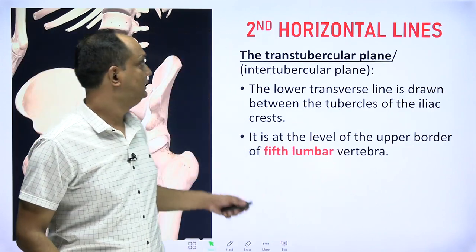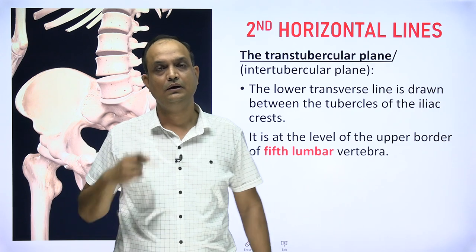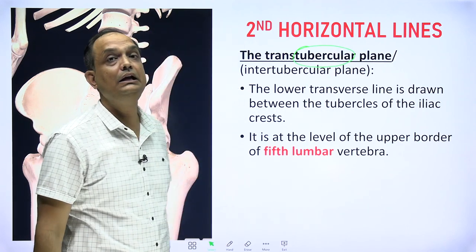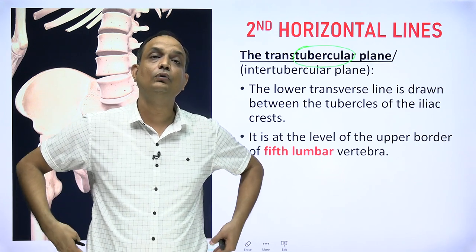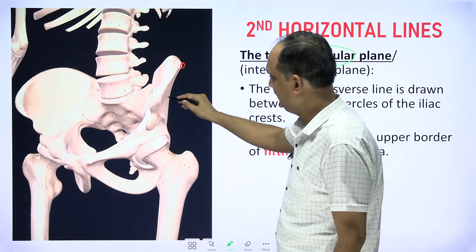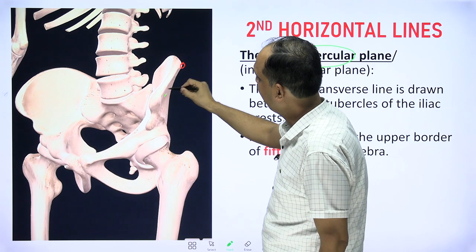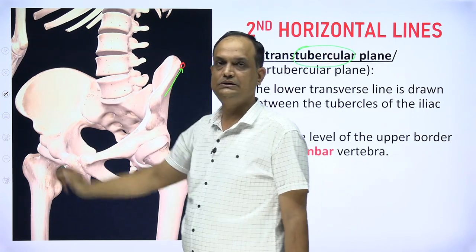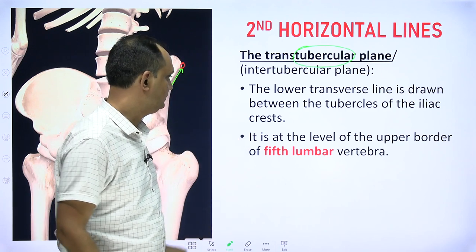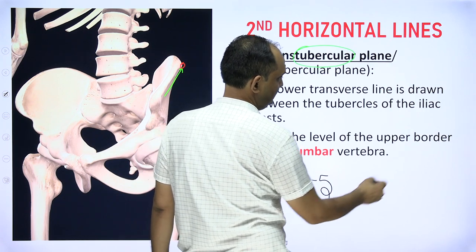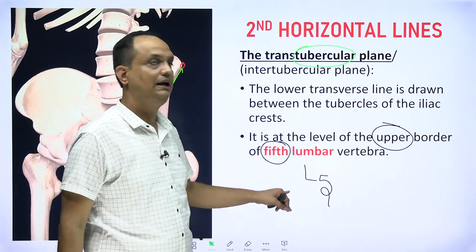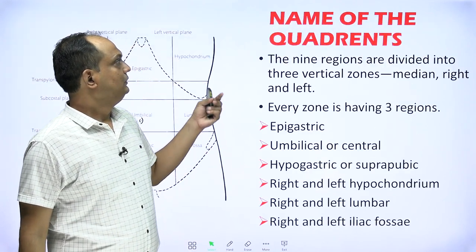The second horizontal plane is the trans-tubercular plane. The tubercle referred to is the tubercle of the iliac crest of the hip bone, located on the outer border about 5 cm behind the ASIS. Joining the tubercles on both sides gives the trans-tubercular plane, which crosses the upper border of L5 — in contrast to the transpyloric plane which crosses the lower border of L1.